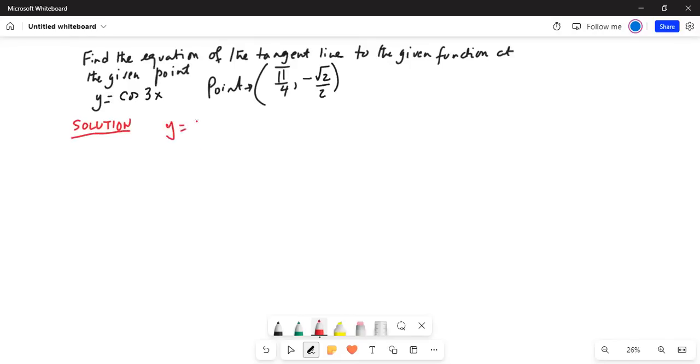y is equal to cosine 3x is the given function. So y prime or dy by dx, which is y prime, is equal to minus 3 sine 3x.